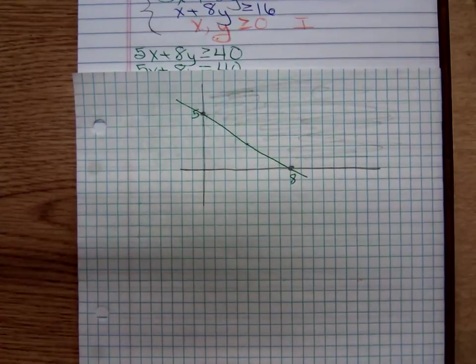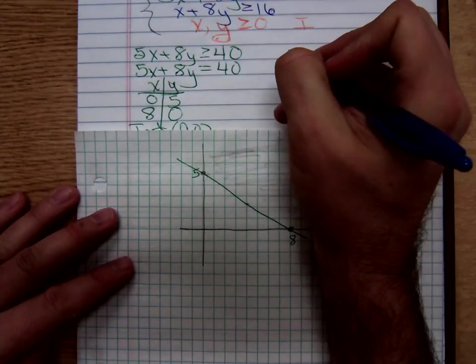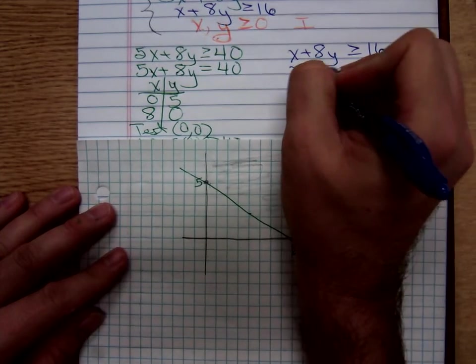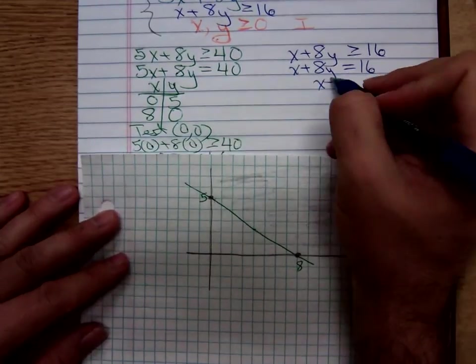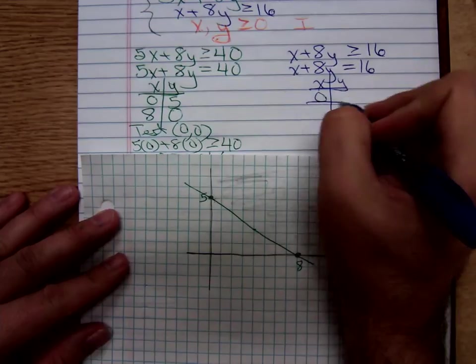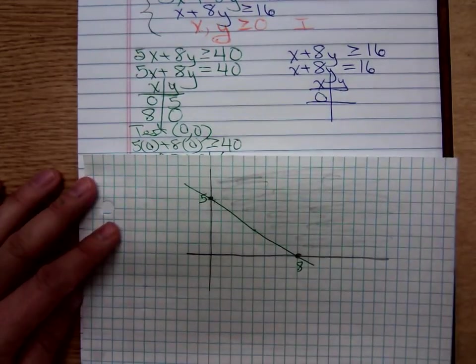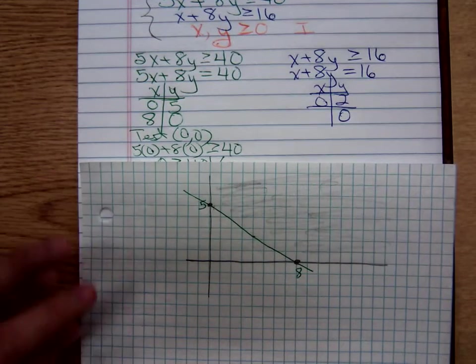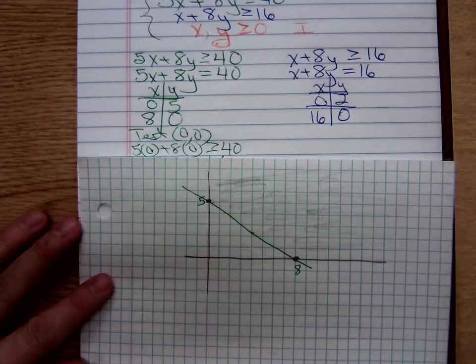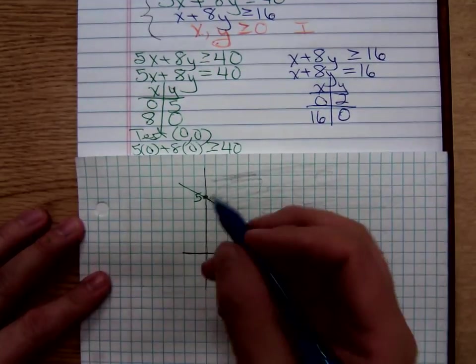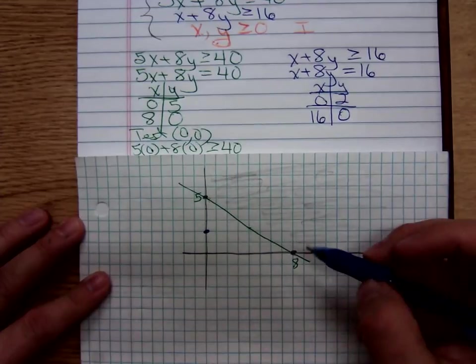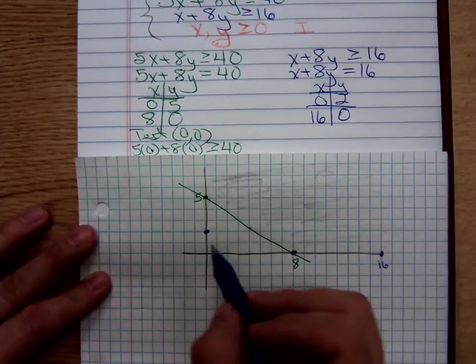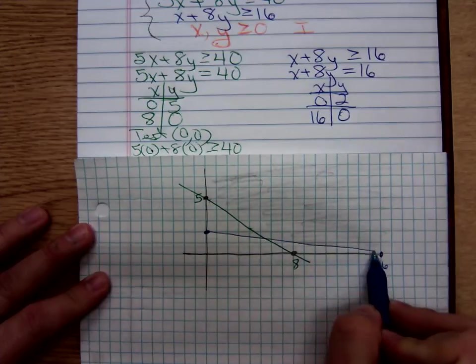Now, the second inequality. The blue inequality. X plus 8Y is greater than or equal to 16. If we graph X plus 8Y equals 16. When X is 0, Y is 2. When Y is 0, X is 16. So, we locate our points on our grid. 0, 2 and 16, 0. Draw our blue boundary line.